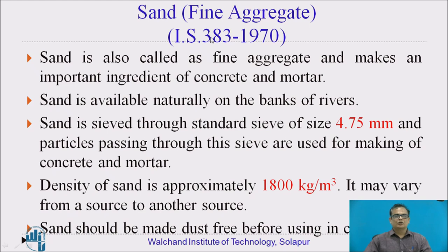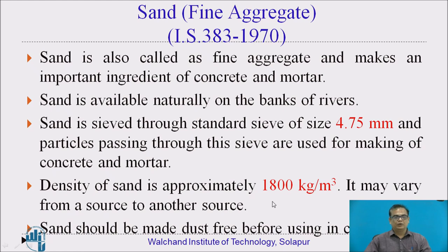Now let us discuss sand, which is also called fine aggregate. As per IS 383-1970, the specifications are laid down. Sand, which is also known as fine aggregate, makes an important ingredient of concrete and also mortar. Sand is available naturally on the banks of rivers, and this sand is sieved through an IS 4.75 mm sieve. Particles passing through this sieve are used for making concrete and mortar. Density of sand is approximately 1,800 kg per cubic meter. Sand should be made dust-free before using in concrete.